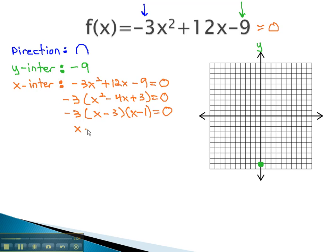We can set each factor that has a variable in it equal to 0 to find what the two x-intercepts are. Adding 3 tells us that x is equal to 3, and this is the first x-intercept on our graph. Adding 1 will give us our second x-intercept on the x-axis at x equals 1.